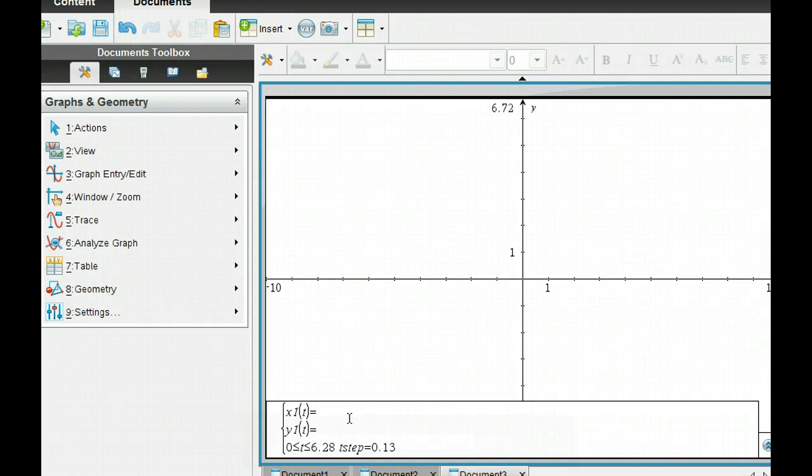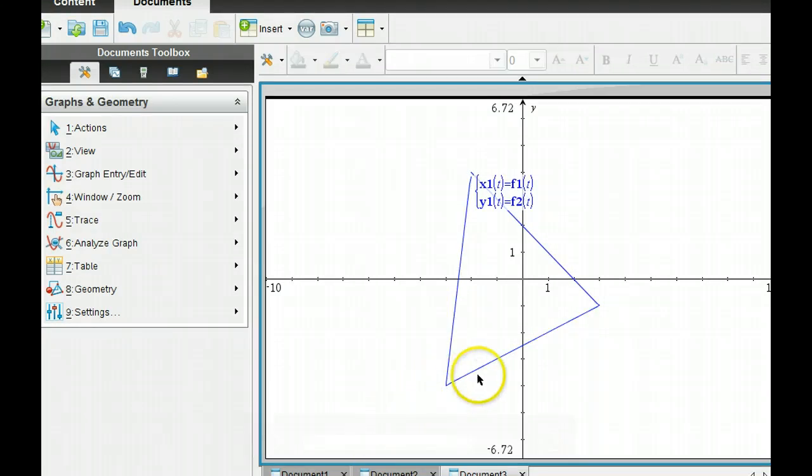Where did I put all of my x equations? Well, my x equations I put into f1. So I put f1 of t, because now I'm dealing with the time. And then I do the y. They were all in f2 of t. And so when I graph this, I get my triangle.